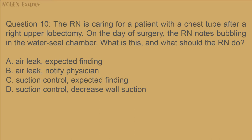Question 10: The RN is caring for a patient with a chest tube after a right upper lobectomy. On the day of surgery, the RN notes bubbling in the water seal chamber. What is this and what should the RN do? A) Air leak — expected finding; B) air leak — notify physician; C) suction control — expected finding; D) suction control — decrease wall suction.